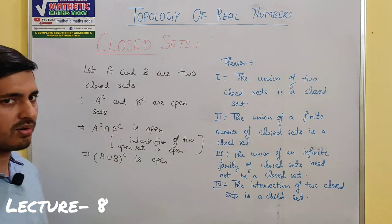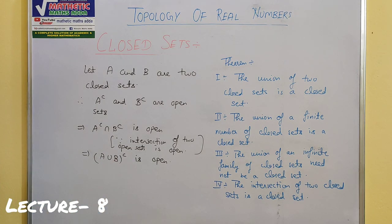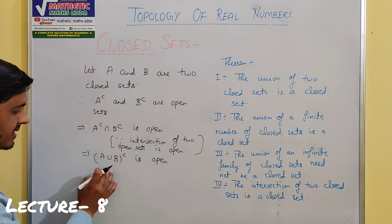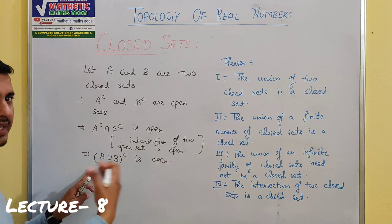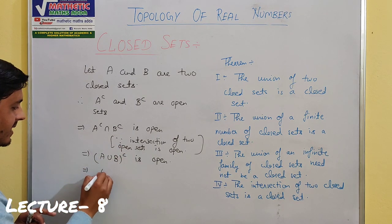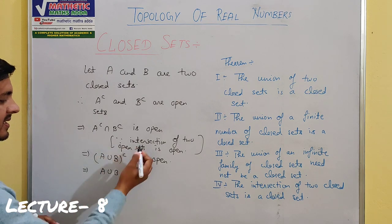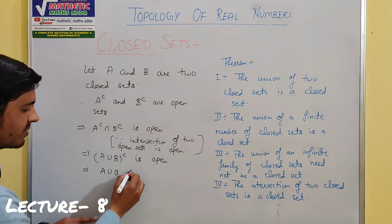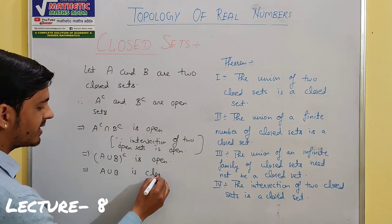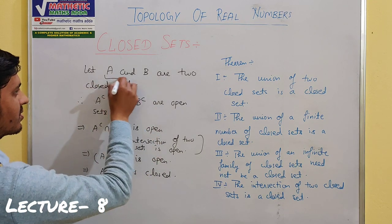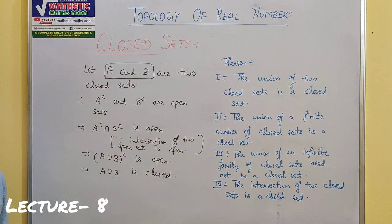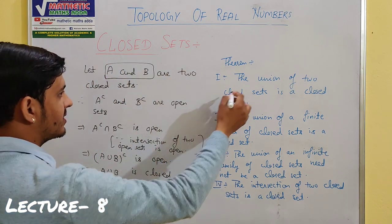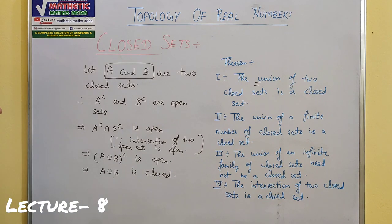By De Morgan's theorem, A complement ∩ B complement = (A ∪ B) complement. So (A ∪ B) complement is open. If any set's complement is open, then that set is closed. So if we take the complement of this open set, we get A ∪ B, which is therefore closed. We have proved that the union of two closed sets is also a closed set. This is quite an easy theorem.